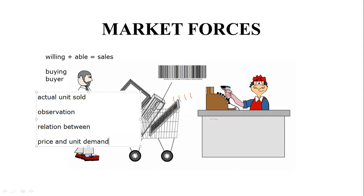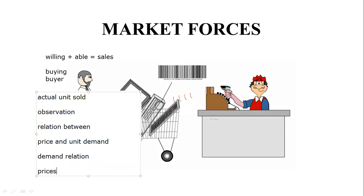When we trace all these observations, we can write the demand relation. The demand relation shows that when the price increases, the units demanded are going to decrease. This is what we call the demand relation. Let's take a tour to understand the relations between the buyers and the sellers.